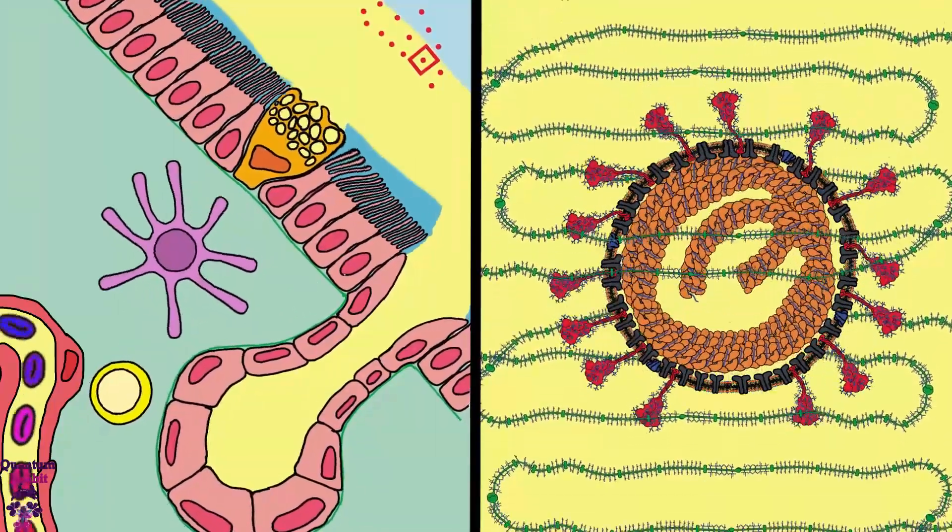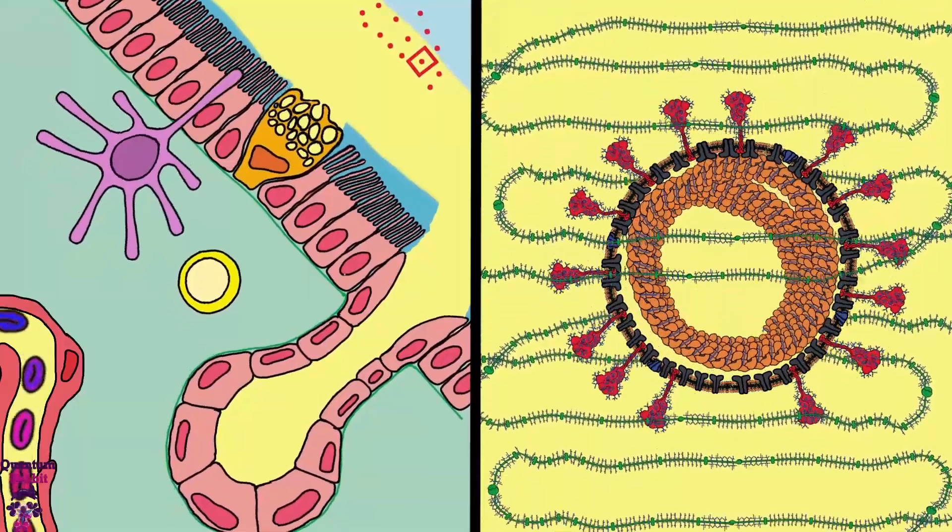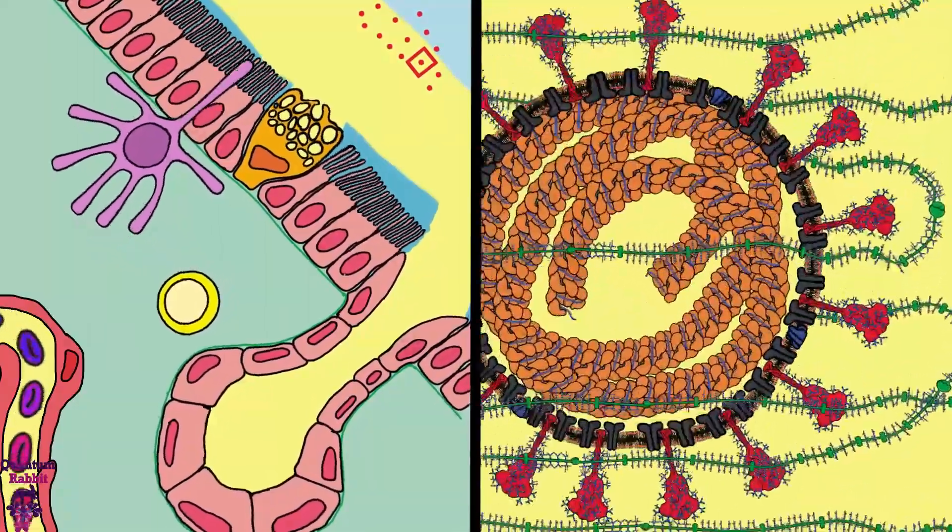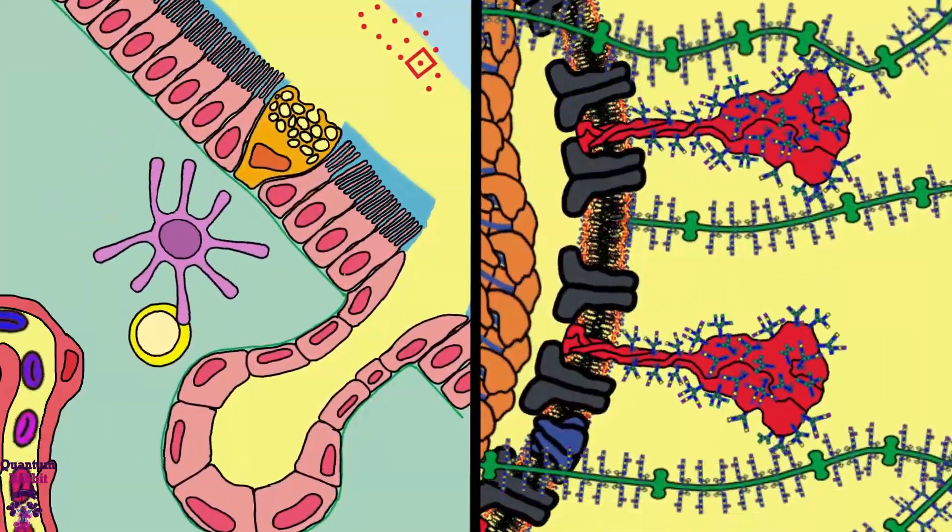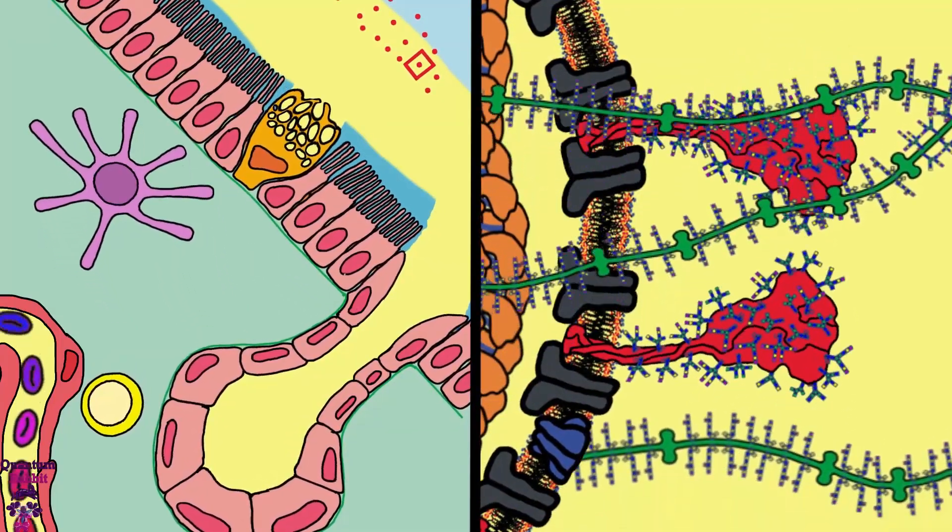The mucins form molecular networks that trap particles in the mucus, impeding their movement. But virions are very small and the spike proteins are highly glycosylated. These oligosaccharides repel each other due to their negative charges, and the virus moves slowly, slipping between the mucins.